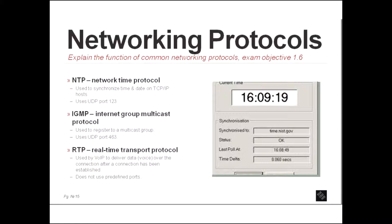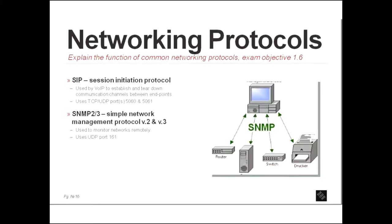Now we have RTP, which is real-time transfer protocol. And that's used by voice over IP. It delivers the voice over the connection. And it can only do that after the connection has been established. And it does not use a predefined port. The two ends of the connection will negotiate what port RTP will occur over. And how does it do that in negotiation?